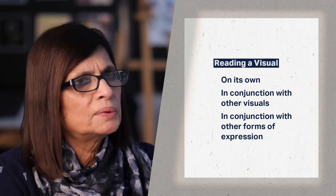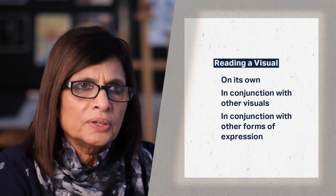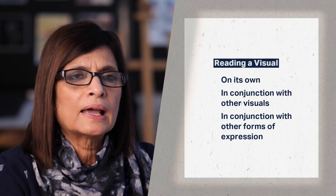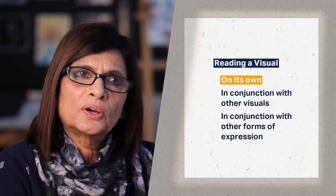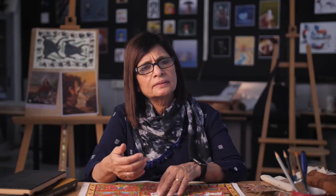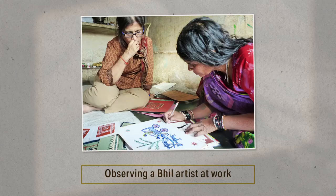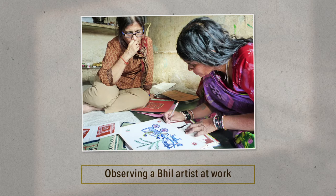Let's elaborate on this a bit more. In doing visual ethnography, we try to read a visual at multiple levels. We try to read a visual or a set of visuals on its own — what does its form, content and aesthetic tell us? So, for instance, in reading the Bheel paintings, I paid attention to their form made of dots, to the colours used and the characters and objects depicted. In doing this, I tried to understand what the painting or the art form was trying to convey.